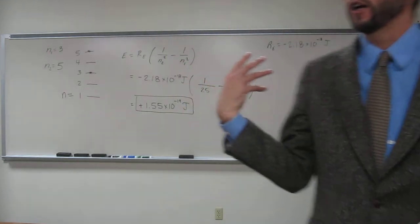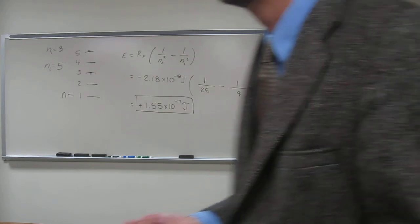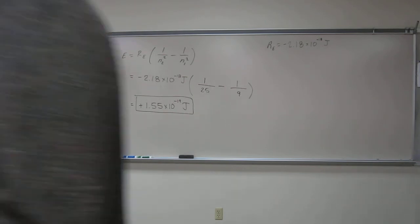Again, this is the shortcut way of doing it. You could use Planck's equation and the speed of light equation to get the energy. But using the Rydberg energy equation kind of cuts those two steps out.